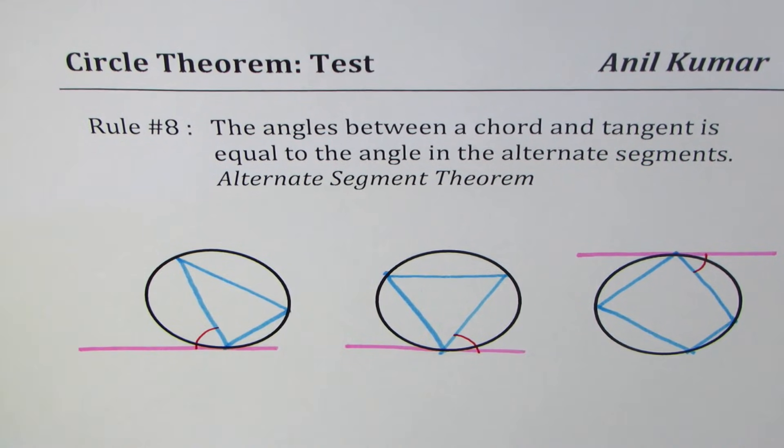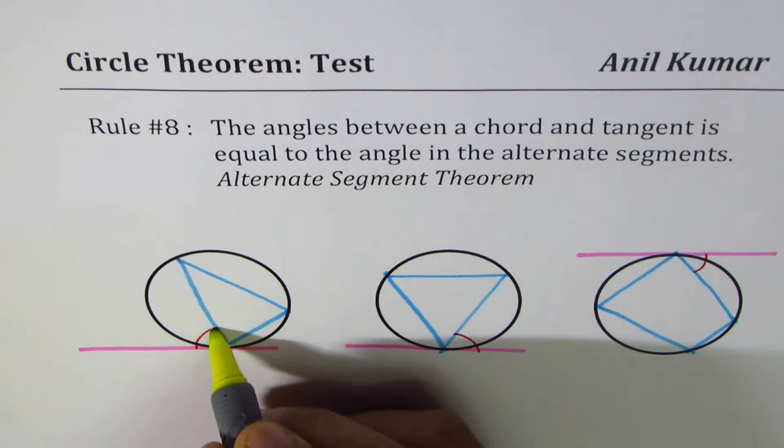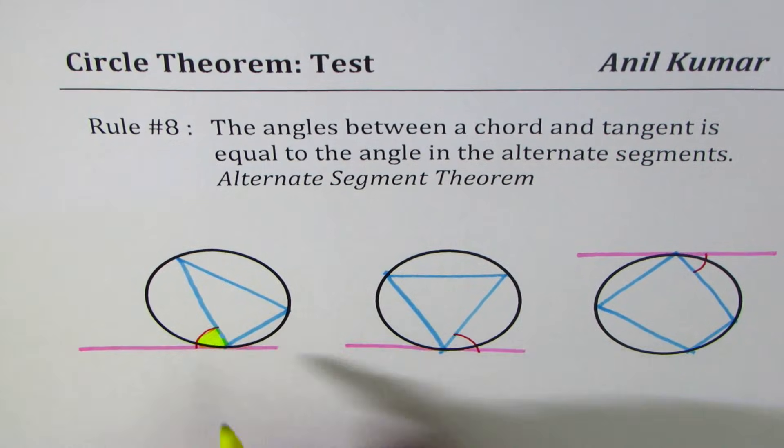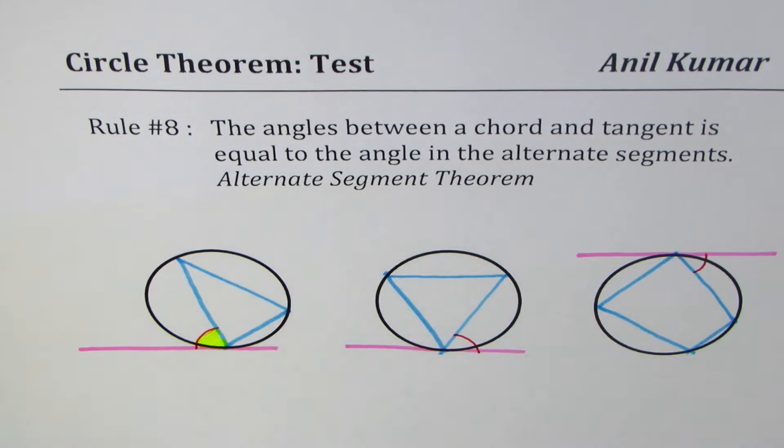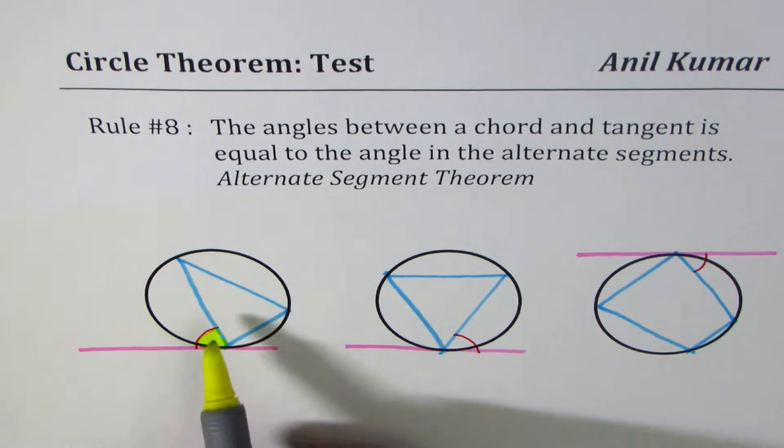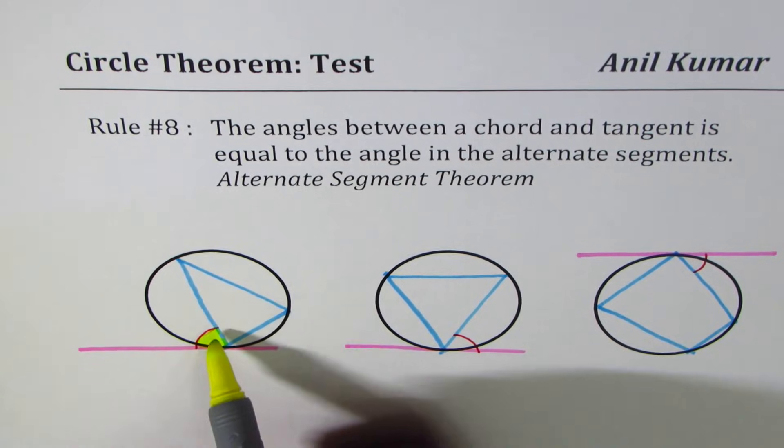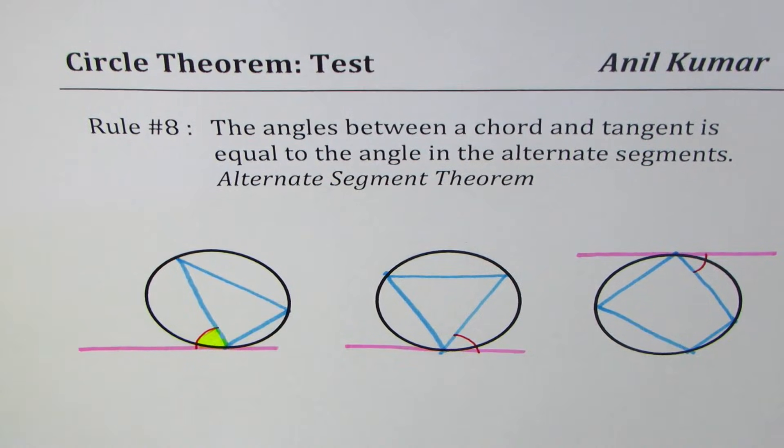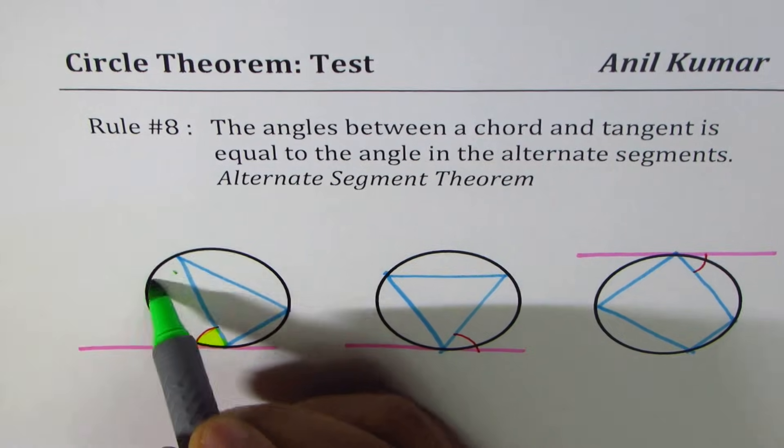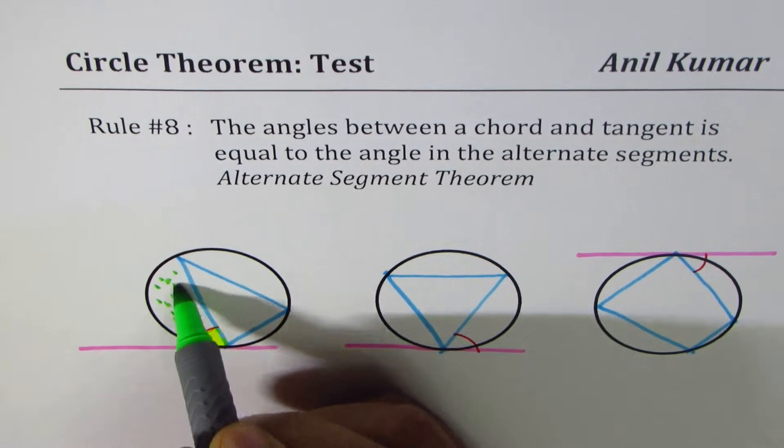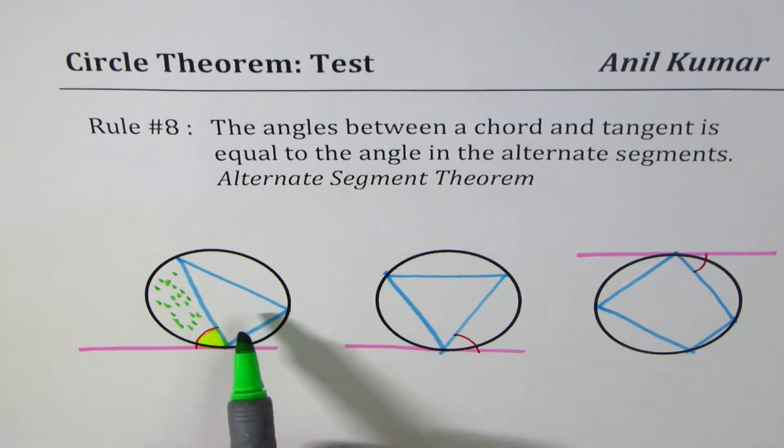We are trying to find in the very first figure which angle is the angle in the alternate segment. Now if that is the angle, then the segment we are talking about is this segment right here. One way to figure it out is we could also see the angle which is opposite to it.